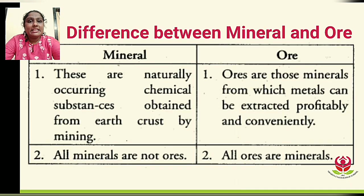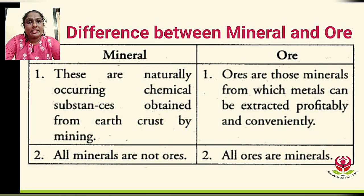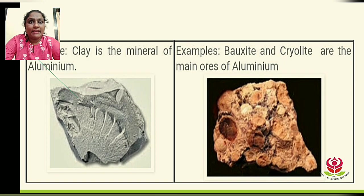Minerals are naturally occurring chemical substances obtained from the earth's crust by mining. Ores are those minerals from which metals can be extracted profitably. Not all minerals are ores, but all ores are minerals.